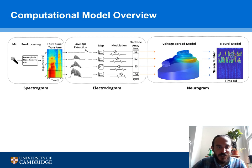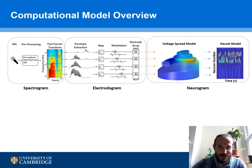Our computational model starts off the way that all CI processing strategies do, by doing a time-frequency decomposition. We then extract the envelope in each channel and use it to modulate a train of biphasic pulses.